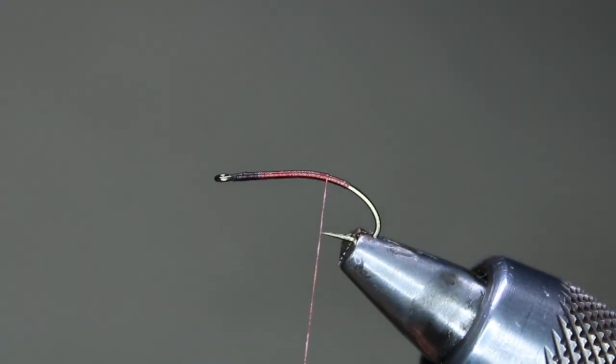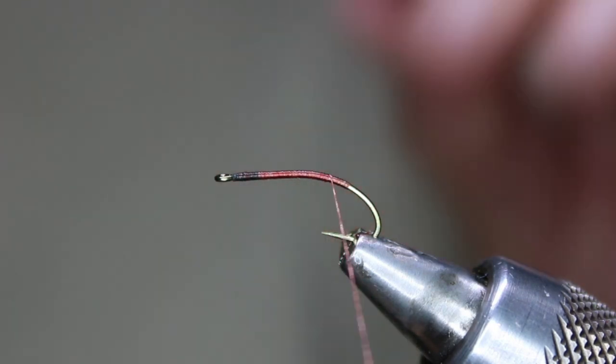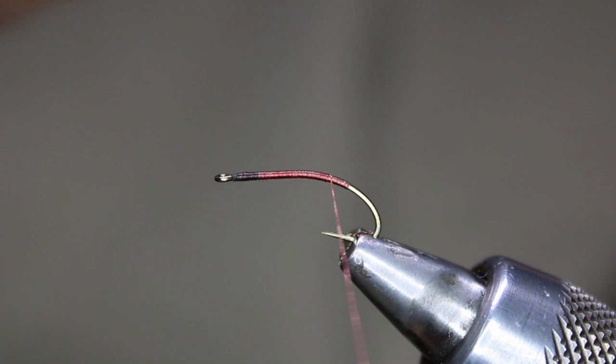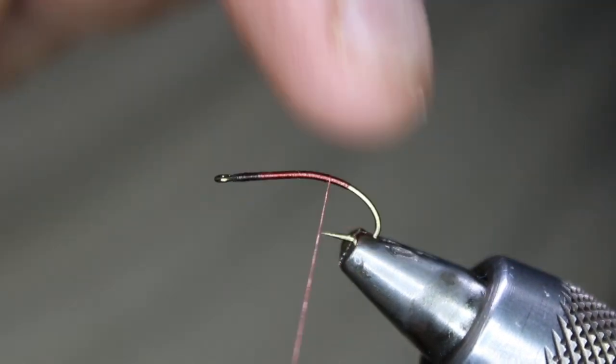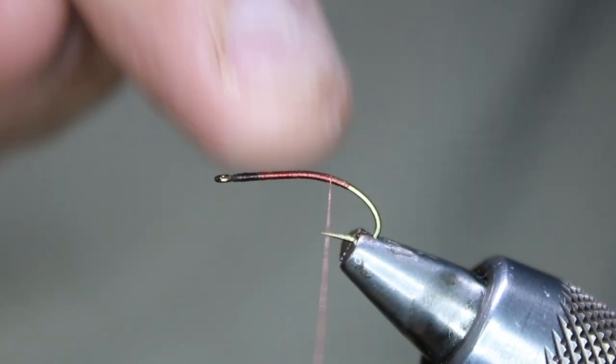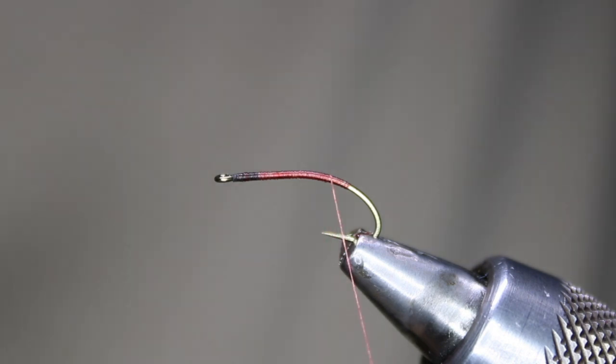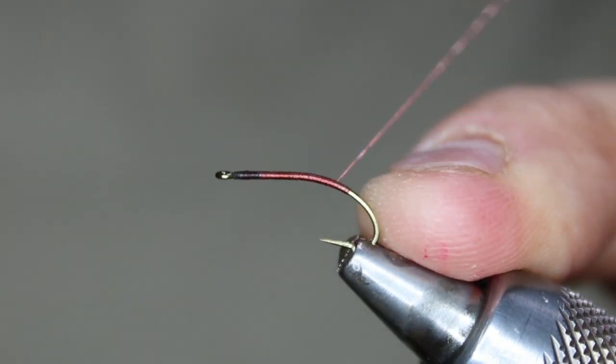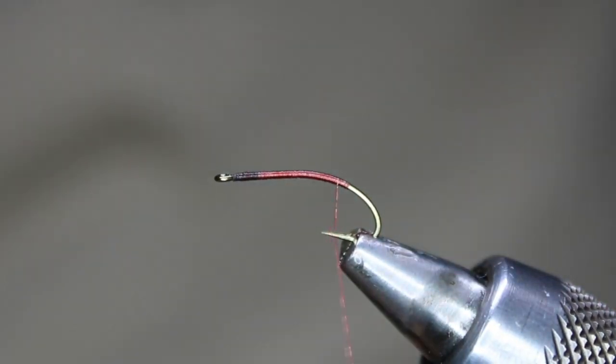So now the other thing I've also done sometimes is I put some Zemperfly or a braid flat braid underneath it, or a tinsel red tinsel. This time I'm not gonna, I'm just gonna use the red underbody.